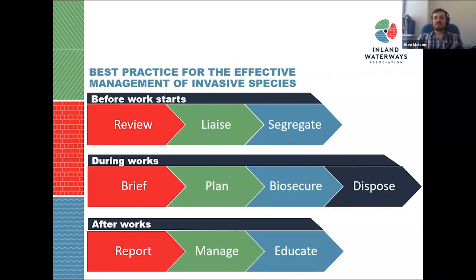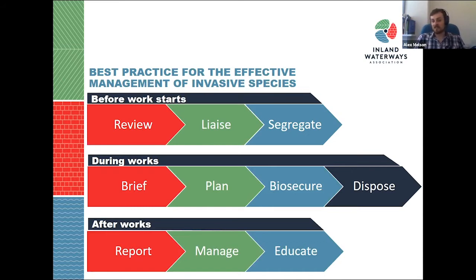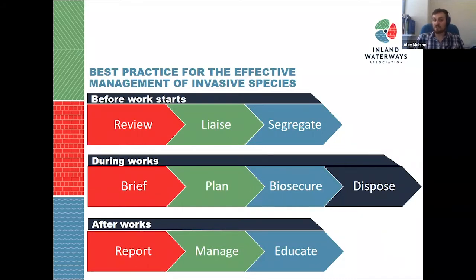What is best practice in managing invasive species for work parties and restoration groups? Before starting any work, review what is present in the area by completing site surveys, doing a site visit, or contacting your local biodiversity record centres. Then liaise with the site owner and statutory bodies that have been identified, and consider what appropriate control measures are needed — since not all species are dealt with in the same manner. Also consider how to segregate invasive species from volunteers, which can be as simple as creating no-go zones or fencing off certain areas.